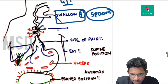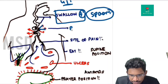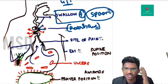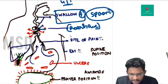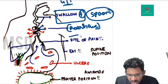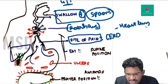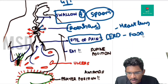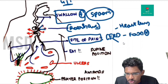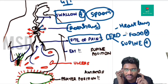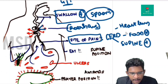Boerhaave syndrome — spontaneous rupture of the esophagus — produces retrosternal heartburn and chest pain. In GERD, there is heartburn exacerbated with food intake; if the patient lies supine after eating, pain worsens. These are clues to differentiate from cardiac chest pain. Peptic ulcer disease presents similarly.